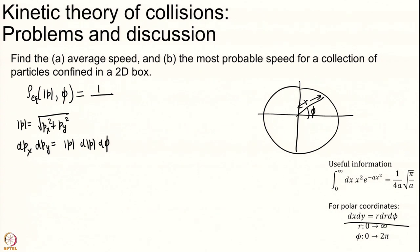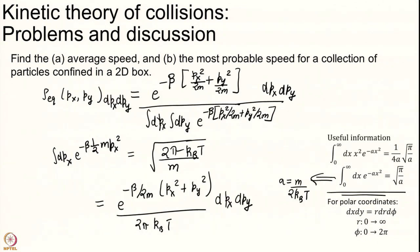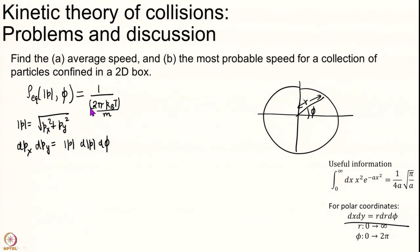This thing will be equal to 1 over 2 pi kt over m. E to the power of minus beta I had px square plus py square which becomes mod p square over 2 m into the volume element.